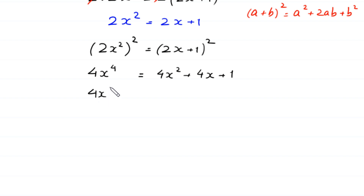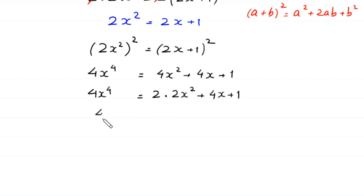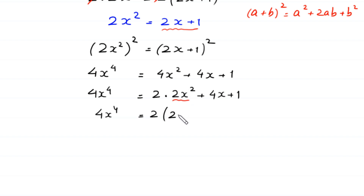This gives 4x to the power 4 equals 4x squared plus 4x plus 1. We can write 4x squared as 2 times 2x squared, plus 4x plus 1. In place of 2x squared we substitute the value 2x plus 1, giving 4x to the power 4 equals 2 times (2x plus 1) plus 4x plus 1.